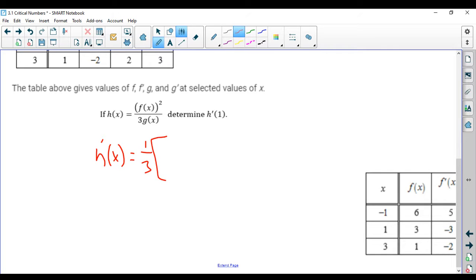So the quotient rule will take the bottom times the derivative of the top. That's f of x quantity squared, so it's a chain rule. So it's the derivative of the outside to leave the inside alone, f of x to the first, then times the derivative of the inside, which is f of x. So the derivative is f prime of x.